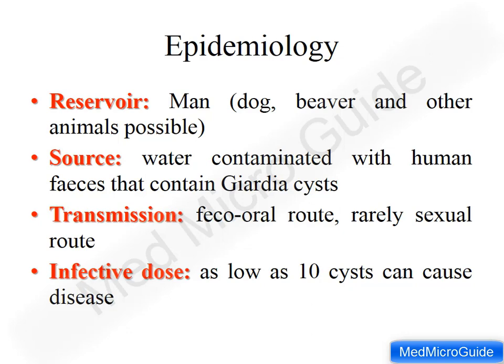For laboratory diagnosis, we can perform parasitological diagnosis, detect antigens in stool, or use serological or molecular diagnosis. Specimens include stool, duodenal aspirate, and duodenal or jejunal biopsy. Stool microscopy can demonstrate cysts and trophozoites: cysts are found in formed or soft stool, while trophozoites are found in fresh watery diarrheal stools. Direct wet mount with saline demonstrates motility of trophozoites, and iodine mount demonstrates both trophozoites and cysts.